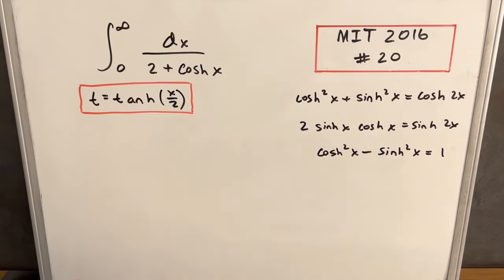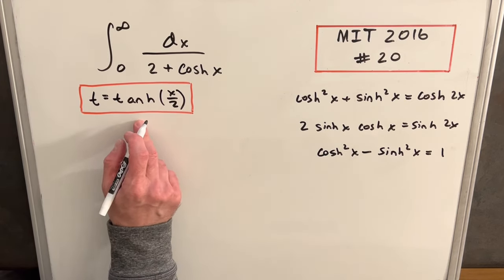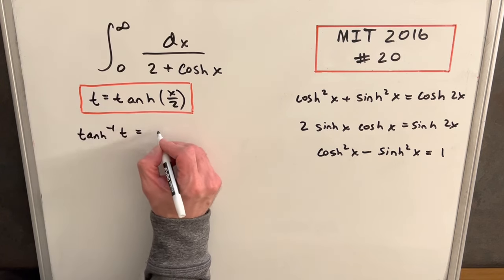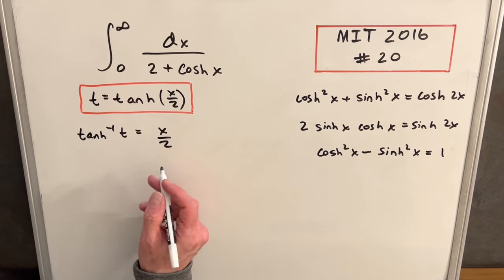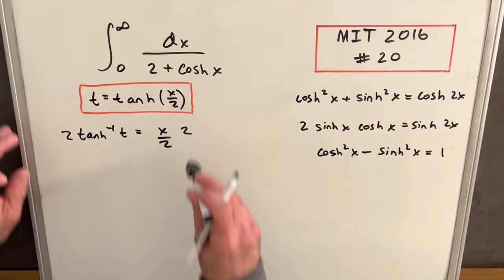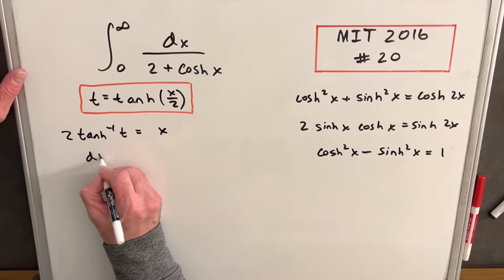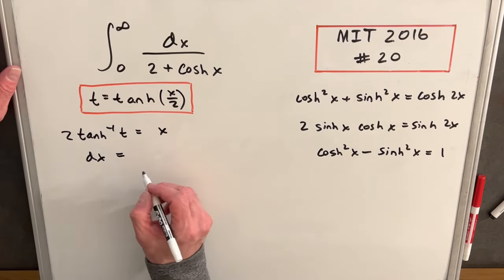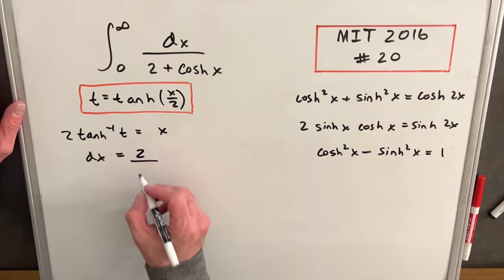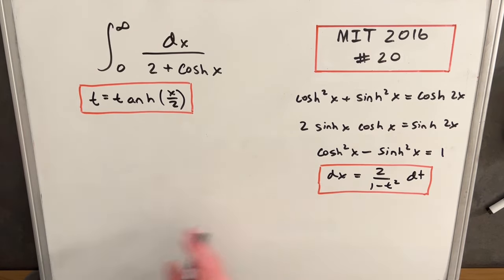The first value I'm going to need is dx, so let's solve for that. We can get the inverse of the hyperbolic tangent: write this as tanh inverse of t equals x over 2. Multiplying both sides by 2, we have x isolated. Taking the derivative on both sides, we have dx equals 2 times — and the derivative of the inverse hyperbolic tangent is 1 over 1 minus t squared — dt. So now we have our value of dx.